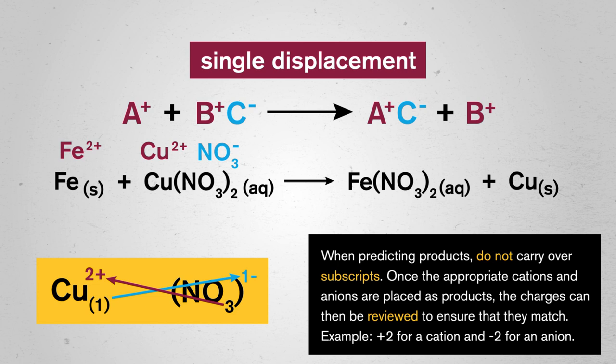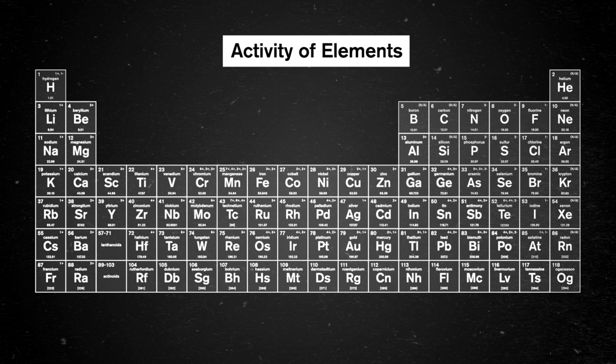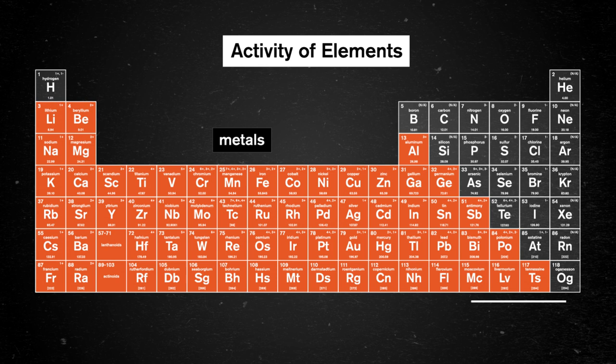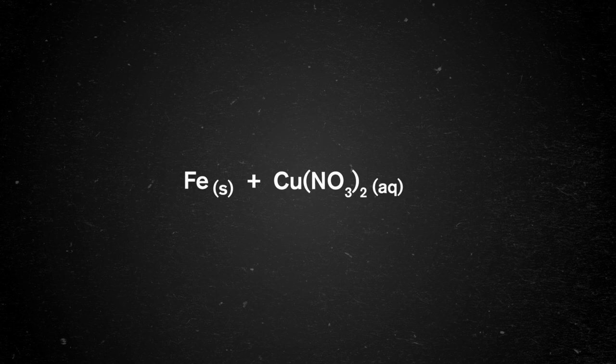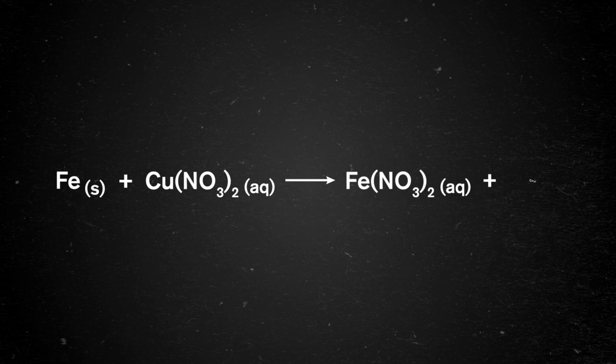One more secret the periodic table can give to us in step four is the activity of elements. If we consult the periodic table again, we can see that iron is a metal. Metals are increasingly likely to react or are active the further left on the periodic table they are, as well as the further down the column they are. If we apply this principle to iron and copper, iron is more active than copper, and can steal the nitrate during the reaction. Now that all our puzzle pieces have come together, we can confidently write out their products to this reaction. Iron 2 nitrate and copper metal.